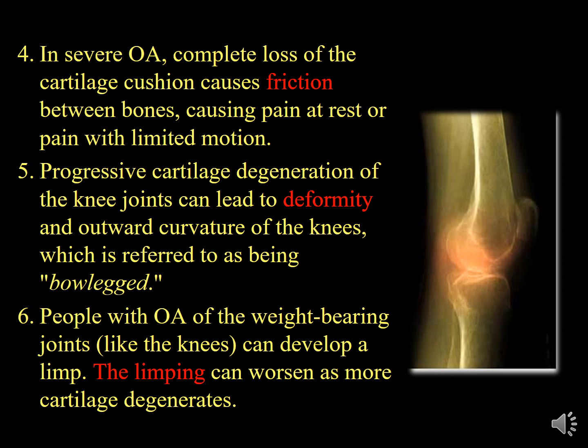Progression of cartilage degeneration leads to deformity. The deformity in Osteoarthritis is a varus deformity (bow-legged). Narrowing at the medial compartment of the knee causes genu varum — an outward curvature of the knee. People with Osteoarthritis of weight-bearing joints like the knee can develop a limp, which worsens with more cartilage degeneration. Patients with Osteoarthritis also have muscle weakness in the quadriceps due to pain and abnormal range of motion.